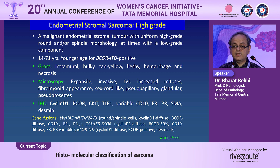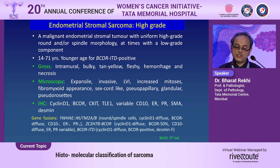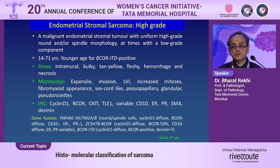Immunohistochemically, high-grade ESS consistently show diffuse cyclin D1 and BCOR expression in most cases. They can also show CKIT, TLE1, and variable CD10 along with ER/PR. SMA and Desmin are mostly seen when there is smooth muscle differentiation, along with H-caldesmon. It is important to know that cyclin D1 is consistently and diffusely positive in most high-grade endometrial stromal sarcomas, including BCOR positivity in certain subtypes.